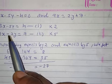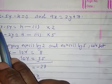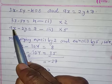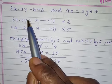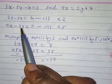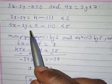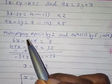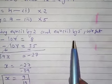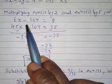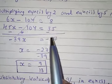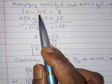We have the choice to either multiply equation 1 by 3 to make the coefficient of x equal, or multiply equation 1 by 2 and equation 2 by 5 to make the coefficient of y equal. Multiplying equation 1 by 2 and equation 2 by 5, we get 6x minus 10y is equal to 8, and 15x minus 10y is equal to 35.